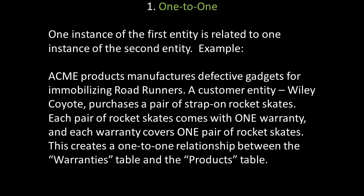The first type of cardinal relationship in a relational database is the one-to-one relationship, where one instance of the first entity is related to one instance of the second entity. For example, a customer entity, Wiley Coyote, purchases a pair of strap-on racket skates from Acme Products. Each pair of racket skates comes with one warranty, and each warranty covers one pair of racket skates, creating a one-to-one relationship between the warranties table and the products table.